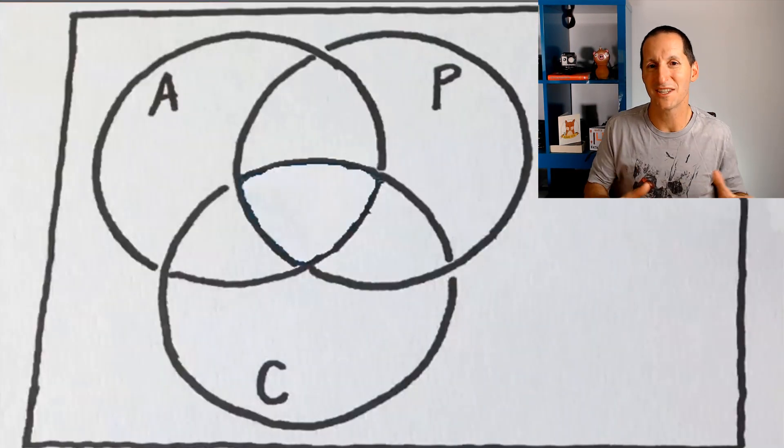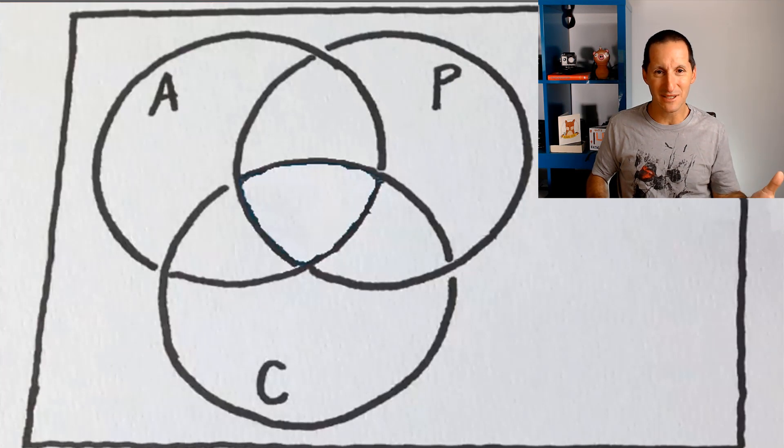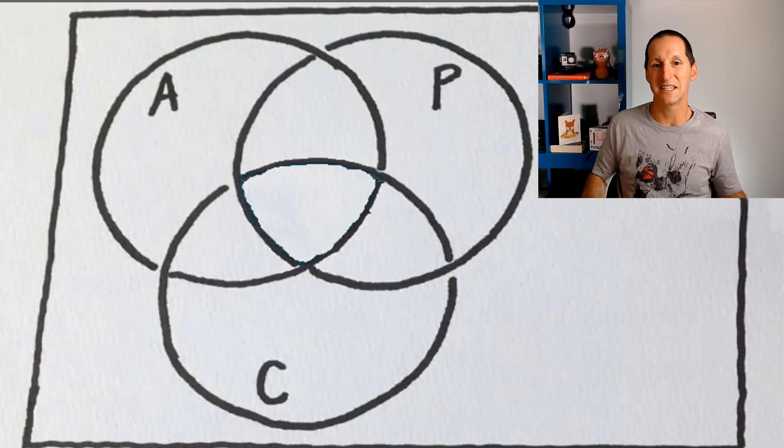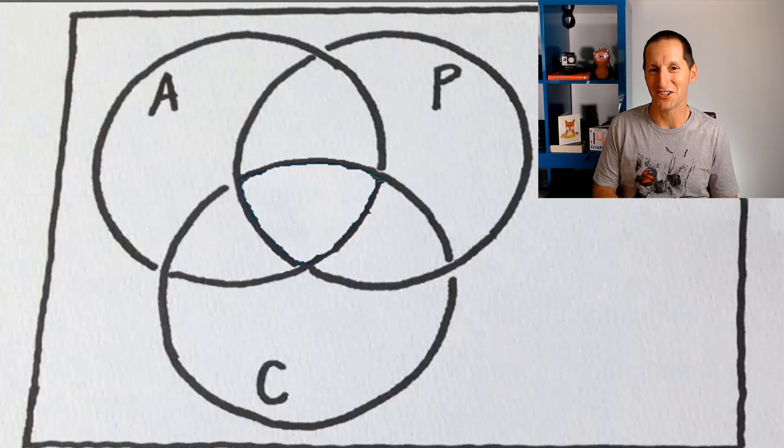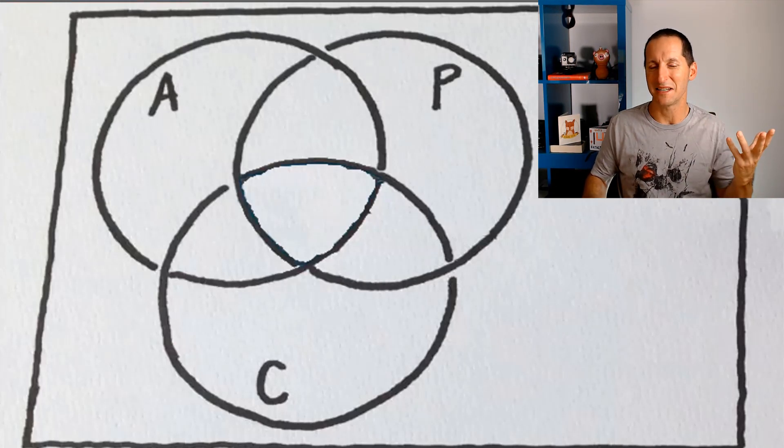So I thought we'd do this as like a Venn diagram. So we have availability, partition tolerance, and consistency. And what I thought I'd use is the metaphor of a petrol station, but we can think in terms of a database in terms of this.